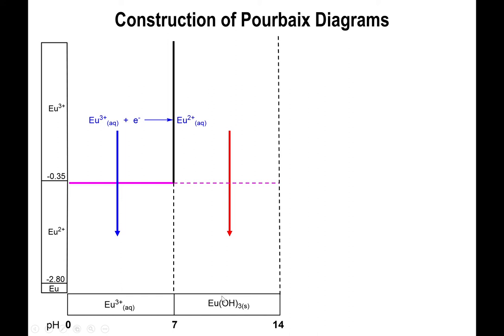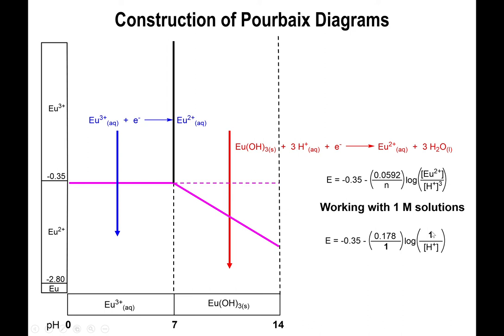By the time we hit basic pHs, the identity of europium three is no longer Eu3+ but rather Eu(OH)3. Your new balanced equation becomes: Eu(OH)3 is your reactant, Eu2+ is your product. To balance this equation, yes you do acquire one electron, but now you're going to add three protons to the left side and three waters to the right side. Because there are protons present in the half redox reaction, the Nernst equation will have H+ present in it. As a result, changes in pH will actually affect the value of the potential.